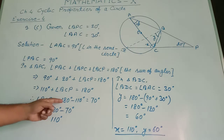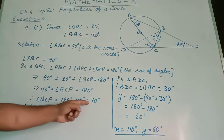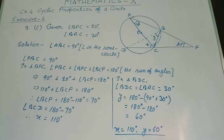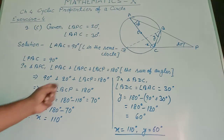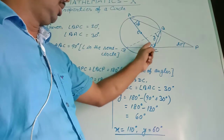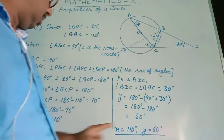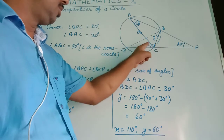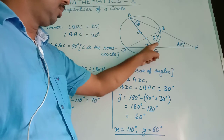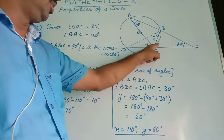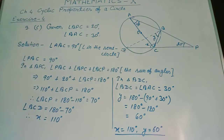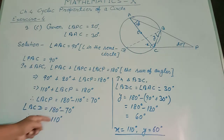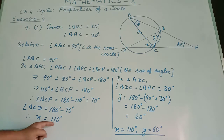Therefore, BCP equals 180 minus 110 degrees, which equals 70 degrees. Now, BCP and BCD are supplementary — their sum is 180 degrees. So BCD equals 180 minus BCP, and BCP is 70 degrees. Therefore, BCD equals 180 minus 70 degrees. BCD is X, so X equals 110 degrees.